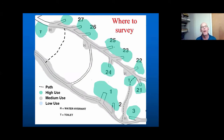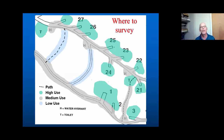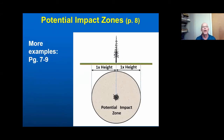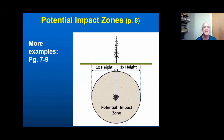Moderate use areas might be along the roadways — and you can see a heavily used path at the bottom right of the screen, which we'd consider moderate use. Lightly used areas — say that path in the upper left is very lightly used, or a road that's closed and only occasionally used — would be low use. Much of this definition of where potential impact zones and use areas are can be found on page 8 of the guide, with additional examples on pages 7 to 9.